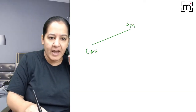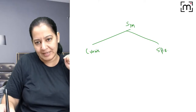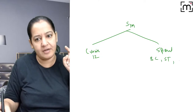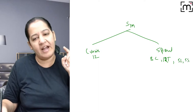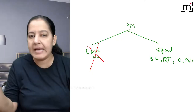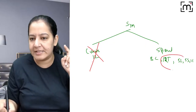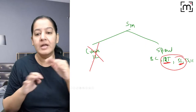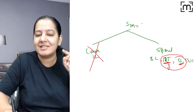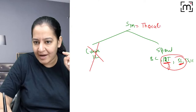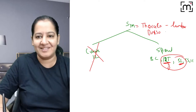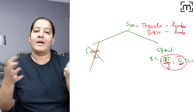So sympathetic nerves are thoracolumbar (or dorsolumbar) in distribution, because thoracic and dorsal refer to the same thing. To summarize: parasympathetic is craniosacral in distribution, and sympathetic is thoracolumbar or dorsolumbar in distribution. This is what you will find in your standard textbooks. This is the most simplified version I can give you.